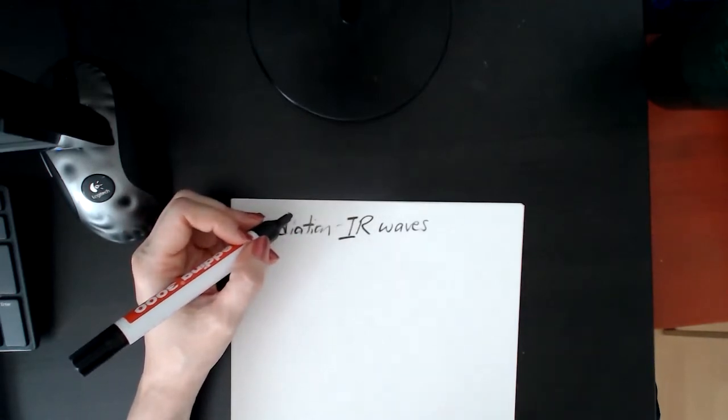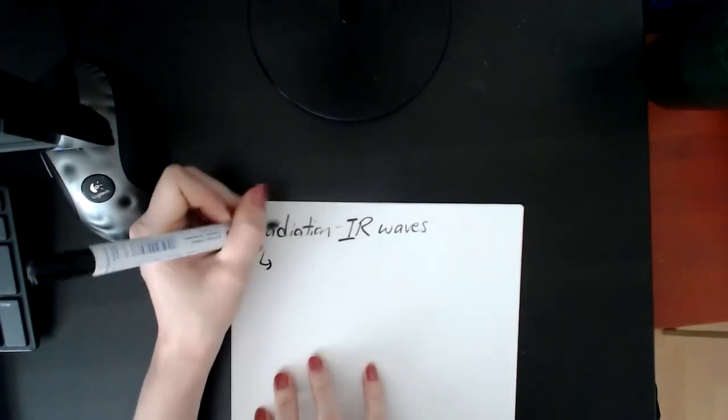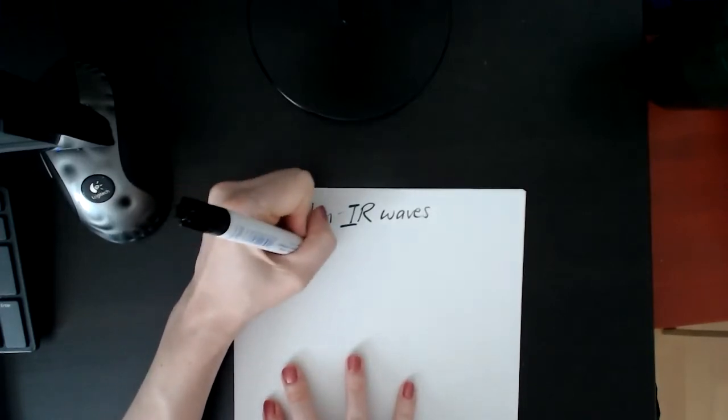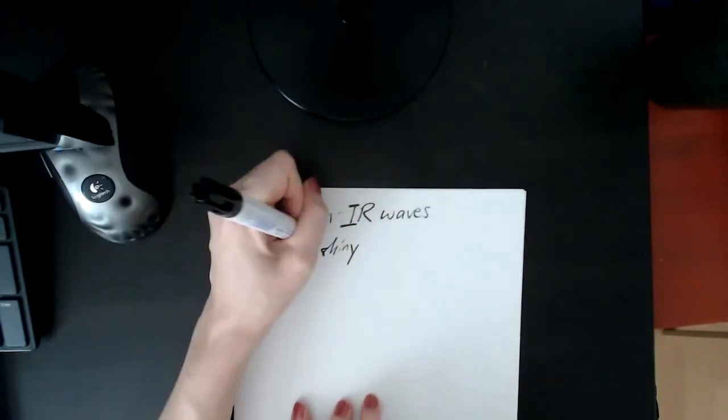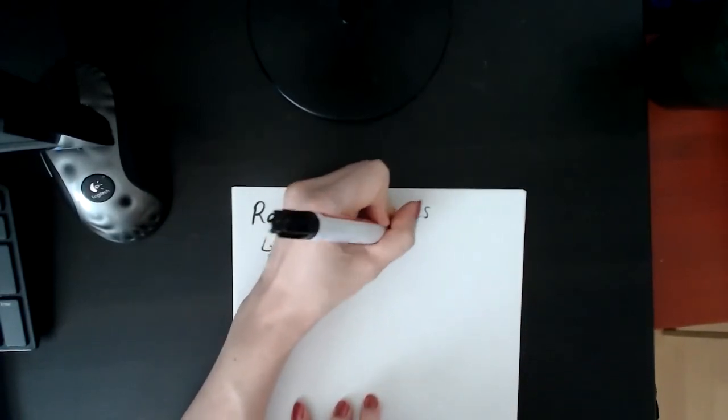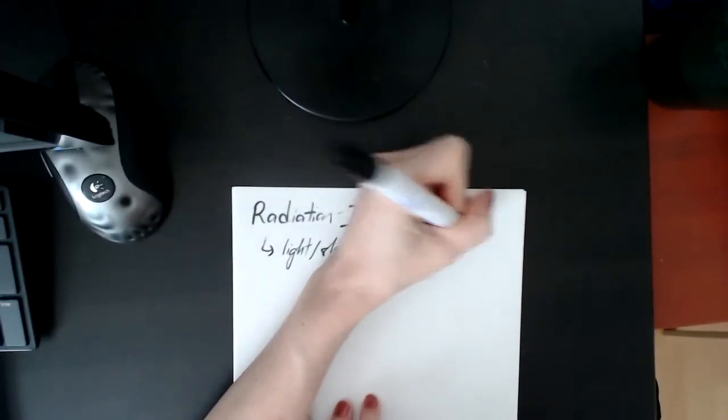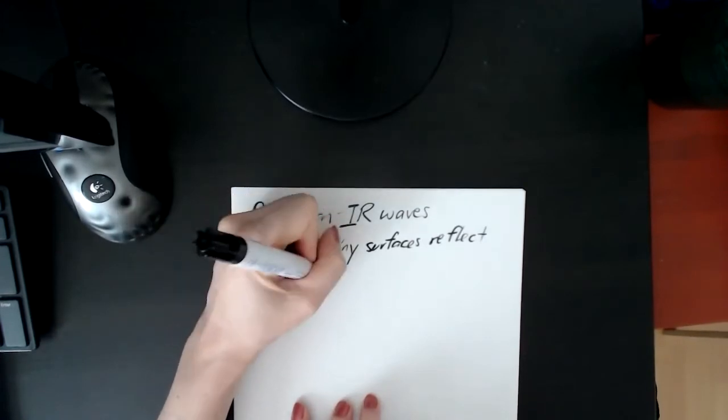The things you need to know about this is that light or shiny surfaces reflect it, just like any other wave - these waves can be reflected. And dark or matte, so black or matte surfaces are going to absorb it.